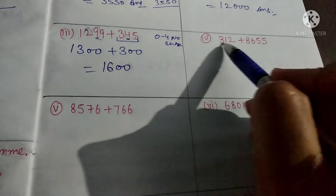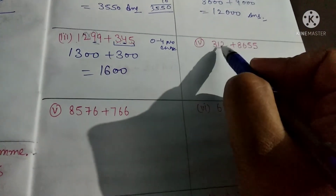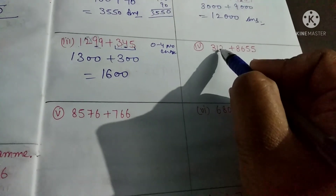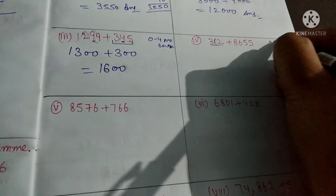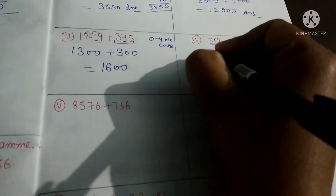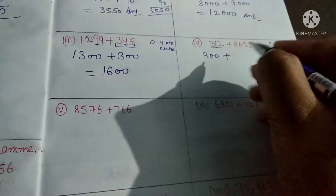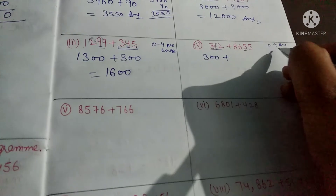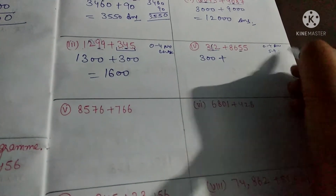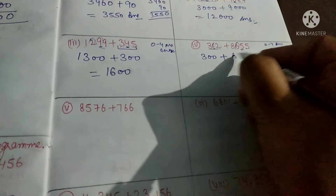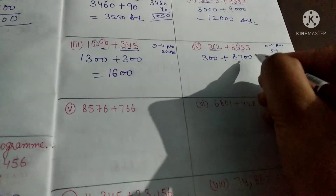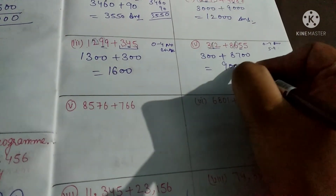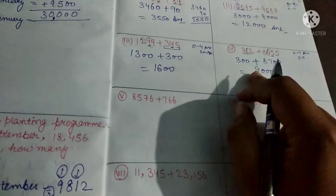Now doing the next sum: 312 and 86. The smaller number is 312. First solve it — 2 and 1 in 312: the digit 1 is between 0 to 4, so no change, meaning it's 300. Now observe the tens place: 5 is between 5 to 9, so we add 1. For 86, that gives 8700. Now add both: it becomes 9000.